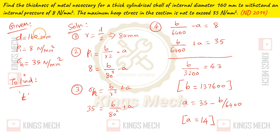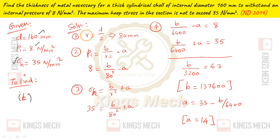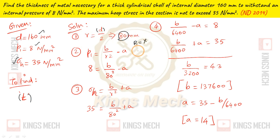Small d is equal to 160 mm. P1 is equal to 8 newton per mm square. Hoop stress is equal to 35 newton per mm square. First step: small r equals small d divided by 2, which equals 80 mm. Capital R is to be determined.